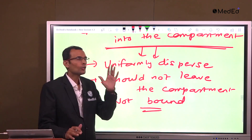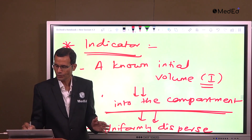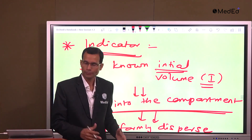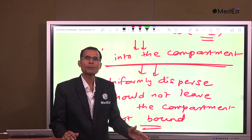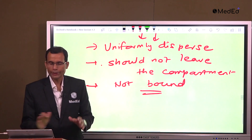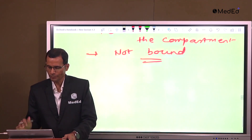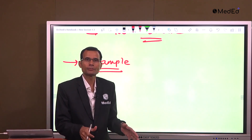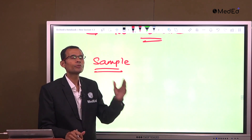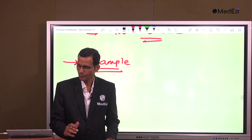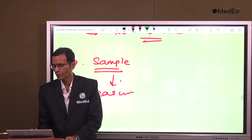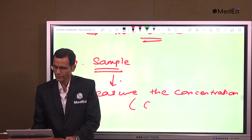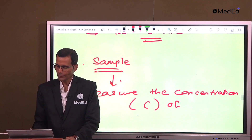A known initial volume — that is I — of the indicator is taken and injected into the compartment that we are measuring. It gets uniformly distributed and dispersed into the compartment. Then we collect a sample from that compartment. If we are measuring ECF, we collect the sample from the extracellular fluid and measure the concentration — that is C — of that particular indicator.